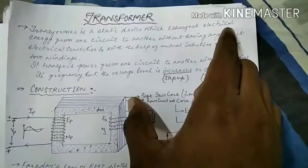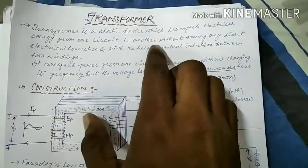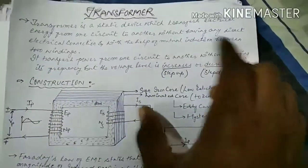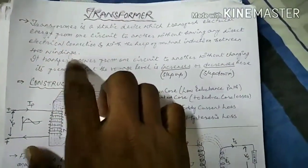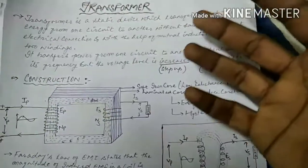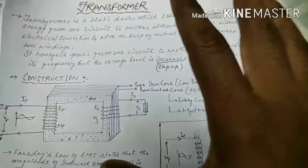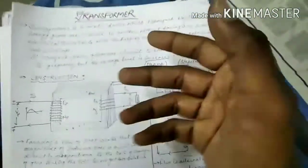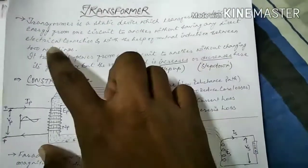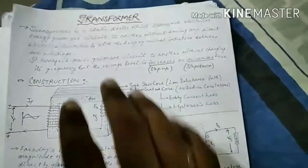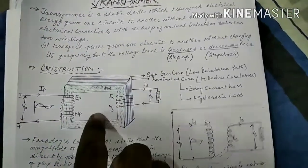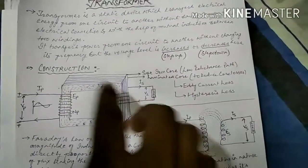A transformer transfers electrical energy from one circuit to another without having any direct electrical connection, and with the help of mutual induction between two windings. Two points we have to remember: first, it is a static device — it does not have any rotating or moving parts like motors. Second, there is no direct electrical connection from primary winding to secondary winding, but it works on the principle of electromagnetism.